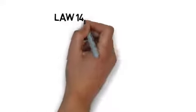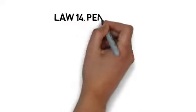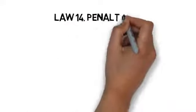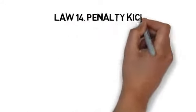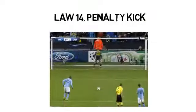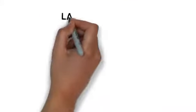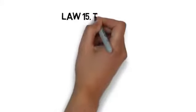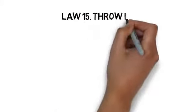Law 14: penalty kicks. When a foul is called in the penalty area, the team is awarded a penalty kick from the penalty spot. Only the goalie can try and block the goal. If it is blocked or rebounds off the goal post, it is in play and the game resumes.